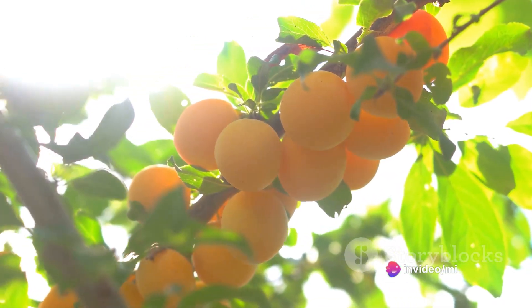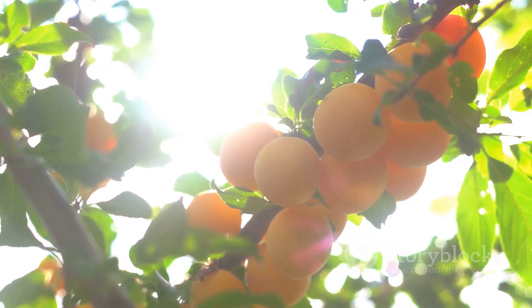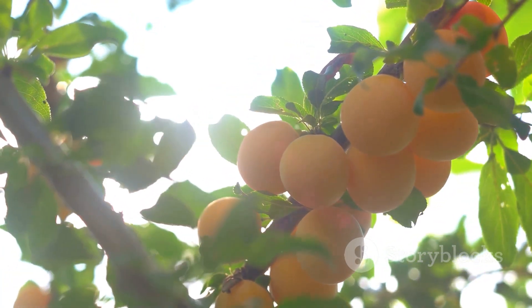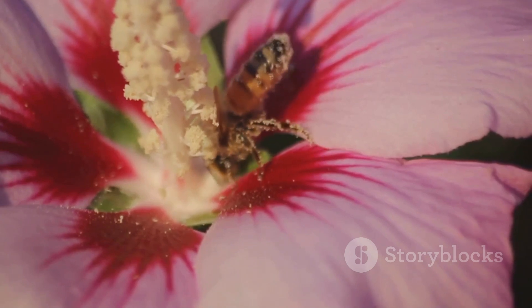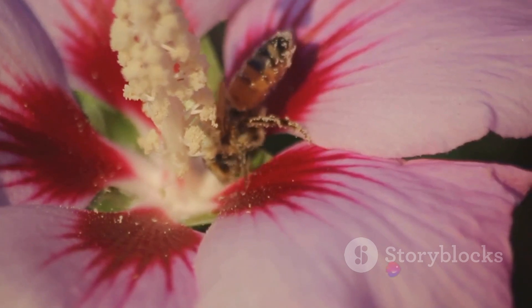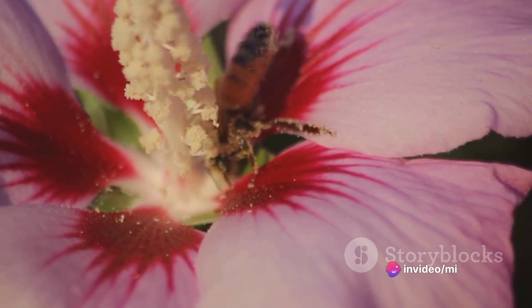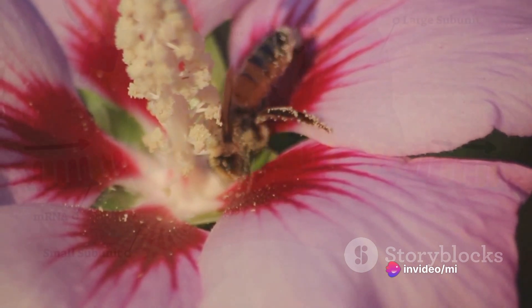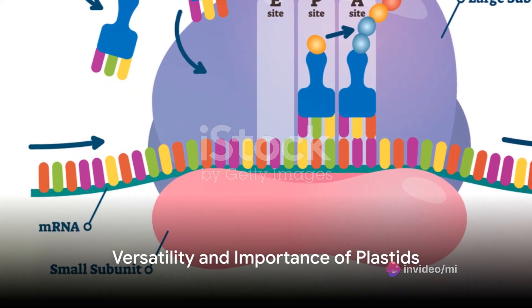Moving on, we encounter chromoplasts. Chromoplasts, unlike leukoplasts, are full of pigments, but they don't house the green chlorophyll. Instead, they contain carotenoids — pigments that give fruits and flowers their vibrant colors of red, orange, and yellow. Besides adding a splash of color to nature, chromoplasts also help in attracting pollinators, a task crucial for plant reproduction.